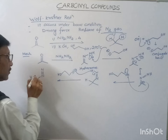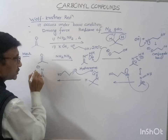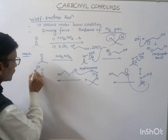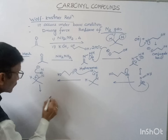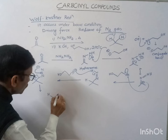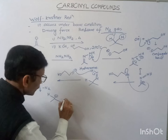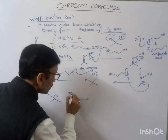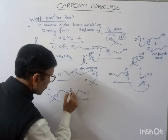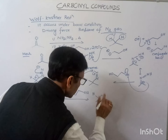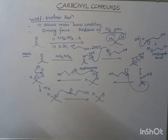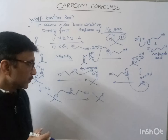Now, the negative charge is on nitrogen. As you can see, the N2 gas is evolved out, and we have a negative charge. In the final step, again this ethylene glycol will act as an acid, and it can take a proton, and the compound will get reduced. This is the mechanism for Wolf-Kishner reduction.